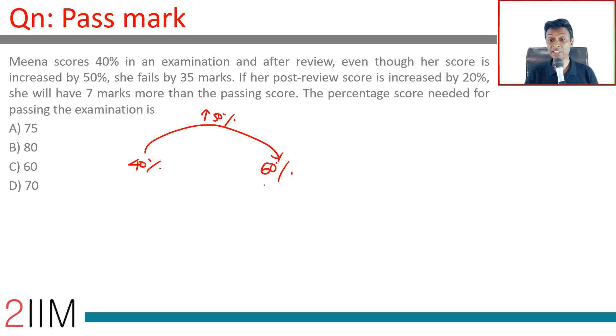Remember that 50 percent of 40 percent, half of 40 percent, is 20 percent. 40 percent of the total increased by 50 percent, she'll go to 60 percent. She still fails by 35 marks. Let's say this is the pass mark.